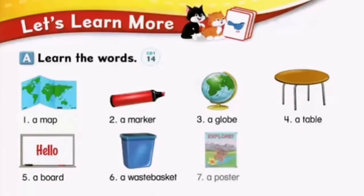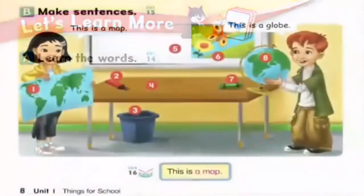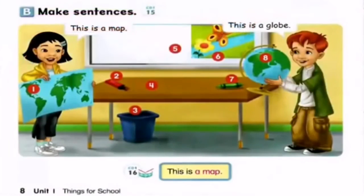Number seven: a poster. Number eight: a crayon. Page eight B — make sentences.